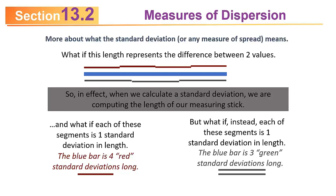So in effect, when we calculate a standard deviation, we're computing the length of our measuring stick. If the standard deviation is really small, it'll take several standard deviations to span a certain distance. If the standard deviation is larger, it takes fewer of them. I don't know if that helps or not. It has no bearing on whether you can do the calculations, but I hope it gives you some more understanding. It's sort of the length of our measuring stick.